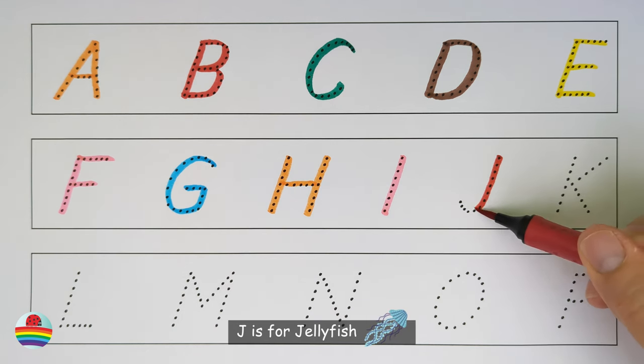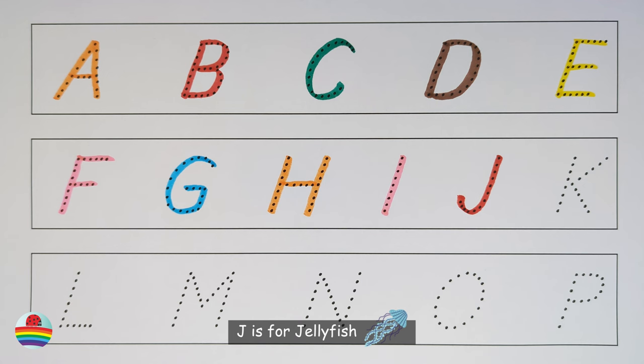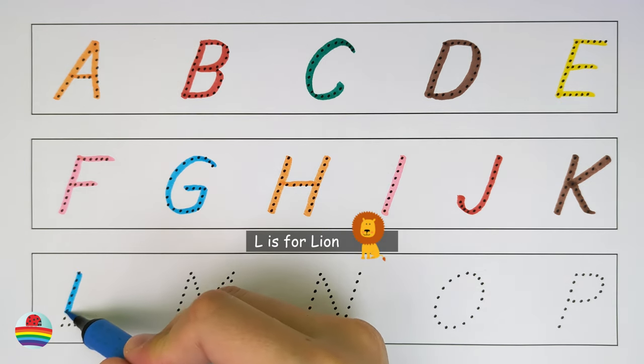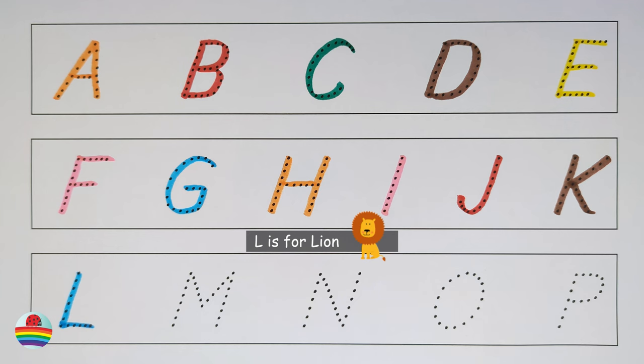J. J is for jellyfish. K. K is for koala. L. L is for lion.